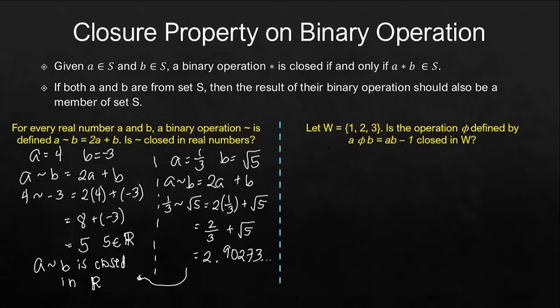What we're going to do here is we will test each value for A and B. And then, if we found out a certain result after operating this phi such that that result is not a member of W, then we can say that this phi is not closed under W.